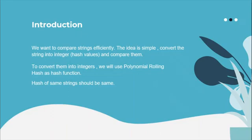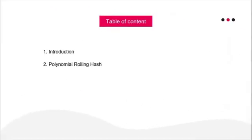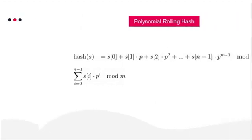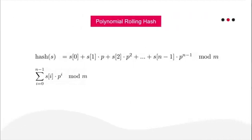We will be using polynomial rolling hashes to calculate hash values of strings. In this lecture we are going to study polynomial rolling hashes, its implementation in C++, and how it works. A polynomial rolling hash is one of many hashing functions. A hash function takes a string as input and generates a hash value.